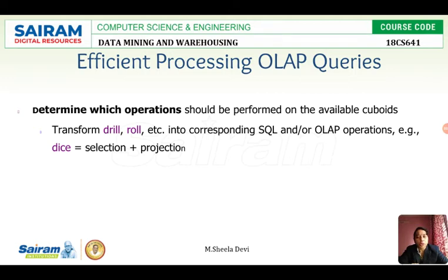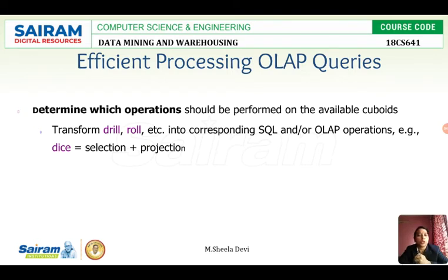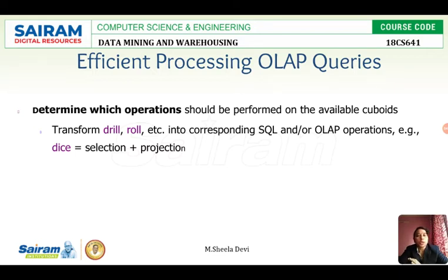Based on the requirement we determine what type of operation is required. If the boss wants sales with respect to street, state, and city, I need a very detailed breakdown, so I go for drill down operation. If the boss asks for total sales for the overall country India, I go for roll up operation because I want overall data, not detailed data. This is how we determine the operation for efficient OLAP query processing.